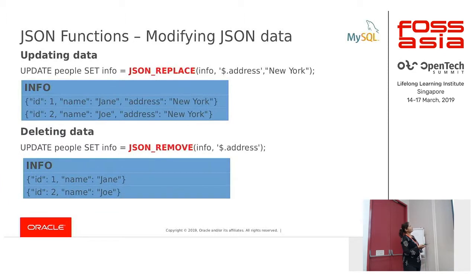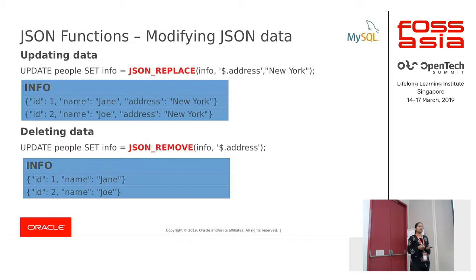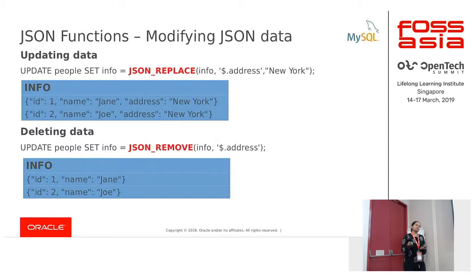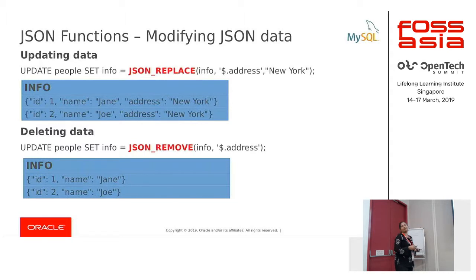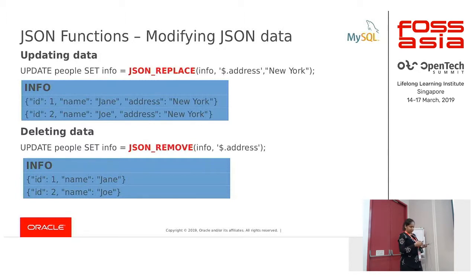If we want to update the address to something that is not null, we use JSON_REPLACE. What JSON_REPLACE does is: if the path exists inside your document, it updates it with the new value. You can see both documents now have address updated with the new value. The next operation is deletion — you can use JSON_REMOVE, which removes a specified path from the document. You have now gone back to the old format where you have ID and name, but no address. We also have JSON_SET which does both JSON_INSERT and JSON_REPLACE together. There are plenty more functions you can use based on your needs.